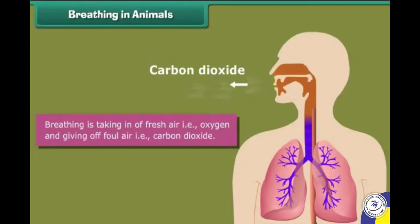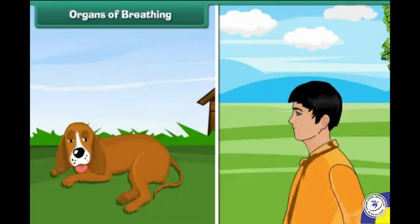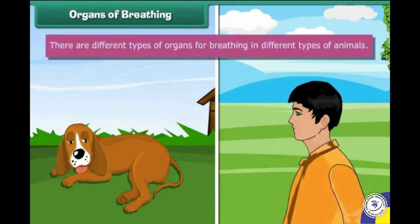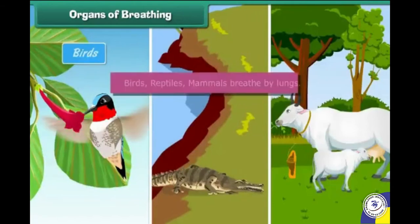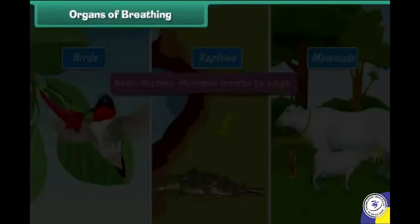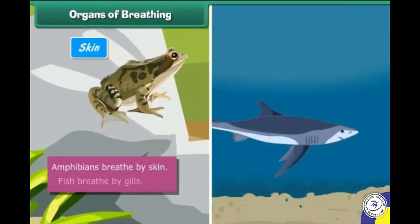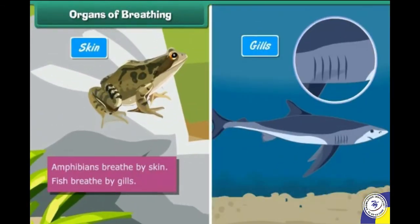Breathing in animals is taking in enough fresh air, that is oxygen, and giving off foul air, that is carbon dioxide. There are different types of organs for breathing in different types of animals. Birds, reptiles, and mammals breathe by lungs. Amphibians breathe by skin. Fish breathe by gills.